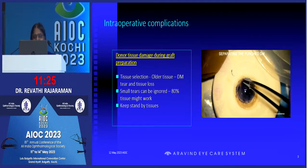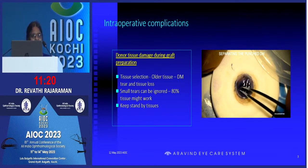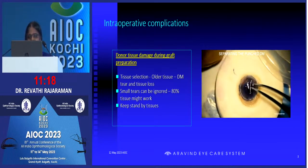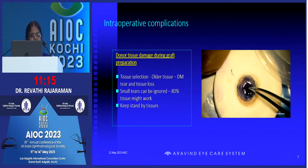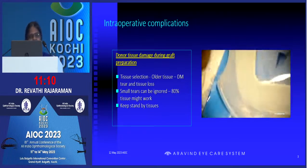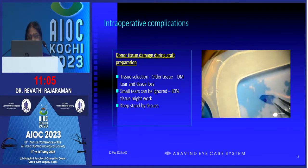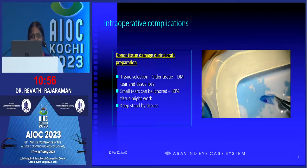But these tissues can be very fragile and they can easily turn when preparing the donor tissue. The advantage is that even if there is a small tag or tear — Dr. Fogla once mentioned about 80% of the tissue being present — you can still go ahead with the DMEC and get good results. So if you get a small tear, don't get discouraged and switch over. You can still try to use it if you have at least a decent large graft.